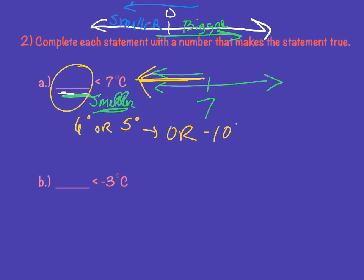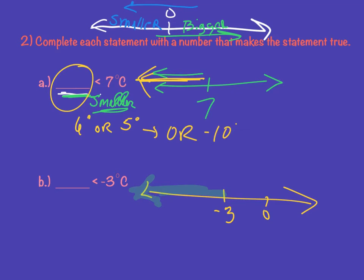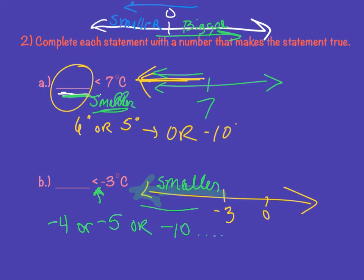The next one is also smaller than the given temperature, just like above, but in this case the number I'm starting at is negative 3. So when I think about that, 0 is up here, so I'm not going to have any positive numbers. I'm only going to have numbers that go in the smaller direction from negative 3, because this says less than. So anything less than negative 3 means going further away from 0 — like negative 4, negative 5, or negative 10. Anything in that direction, as my negatives get smaller than negative 3.